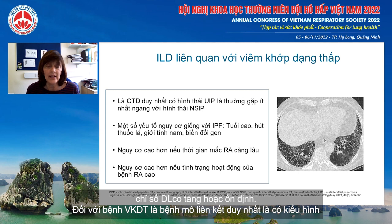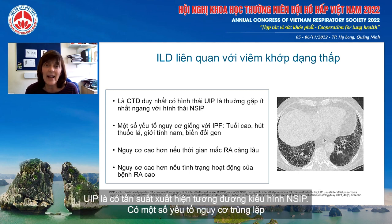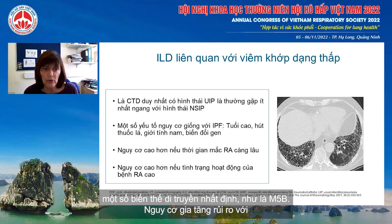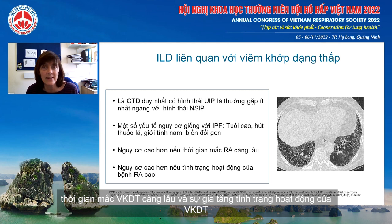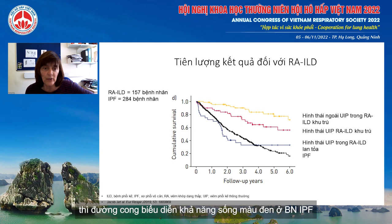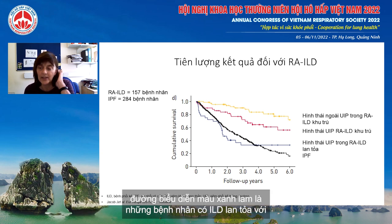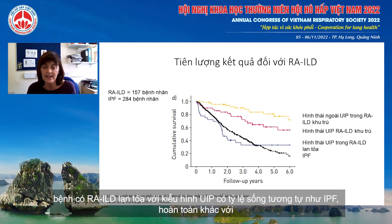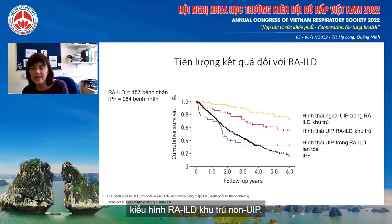In rheumatoid arthritis, it is the only connective tissue disease where a UIP pattern is at least as frequent as NSIP. It has several risk factors overlapping with IPF, including older age, history of smoking, male gender, and certain genetic variants such as MUC5B. There is an increased risk with longer duration of RA and increased RA joint disease activity. In a study from the Brompton, compared to IPF patients, those with extensive ILD and a UIP pattern had a survival very similar to IPF, quite different from those with limited or non-UIP pattern disease.